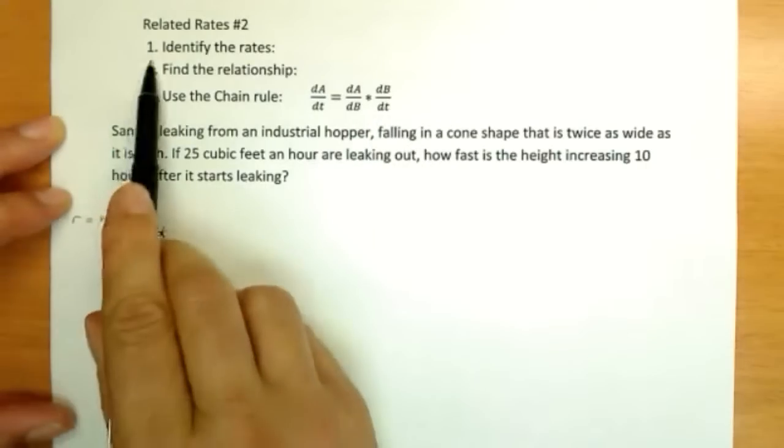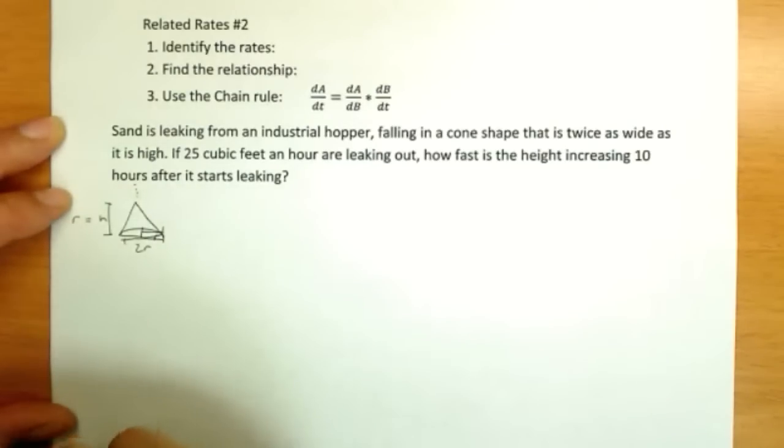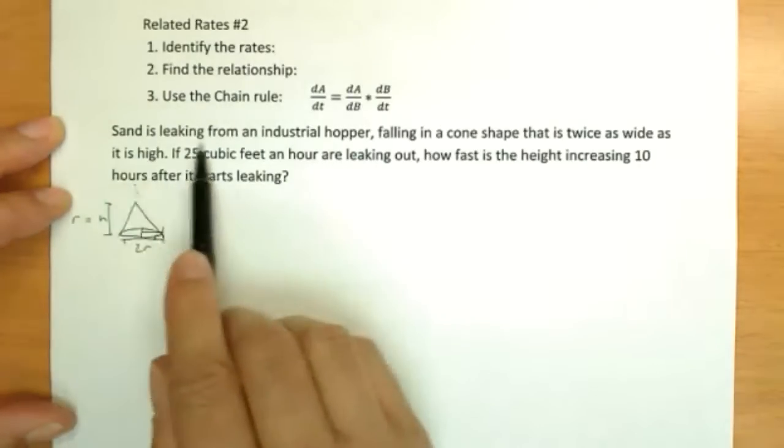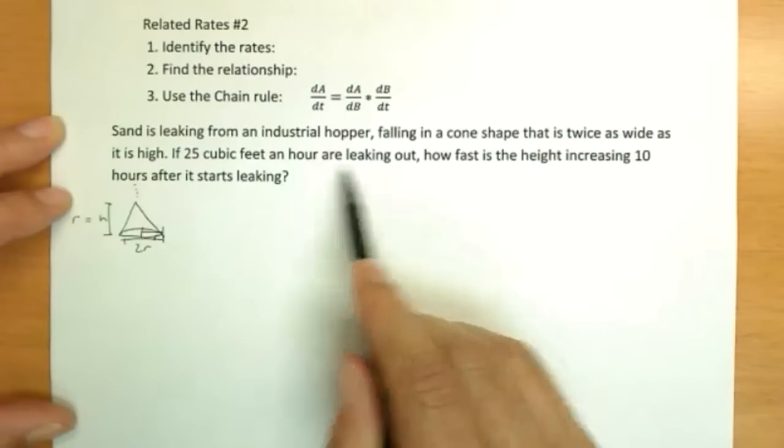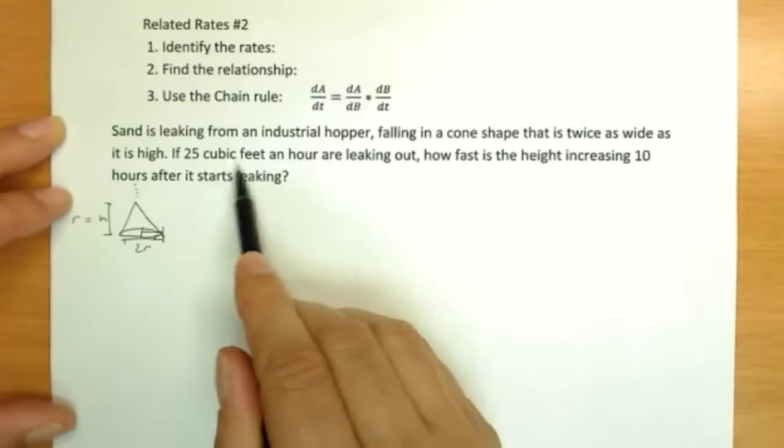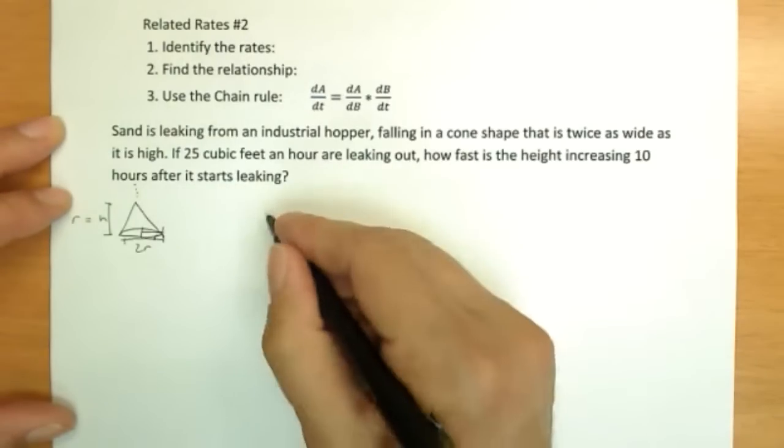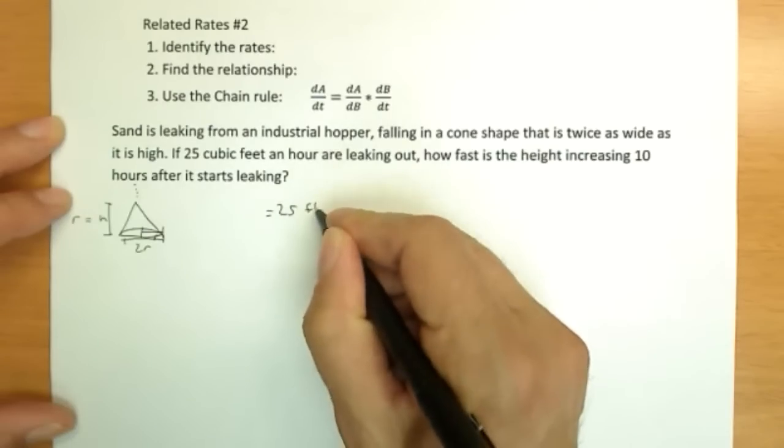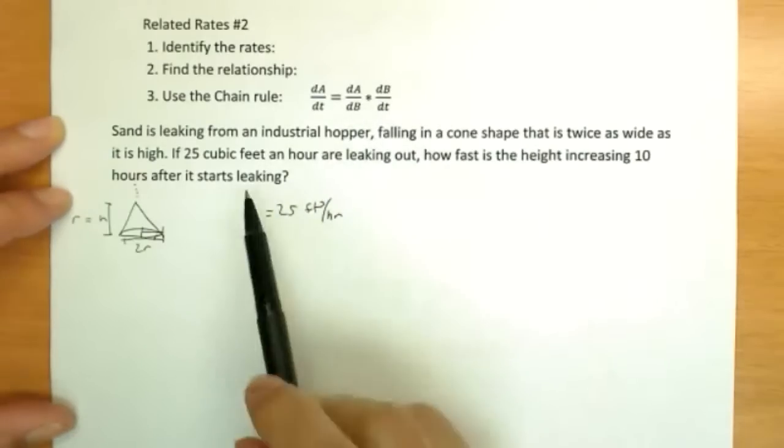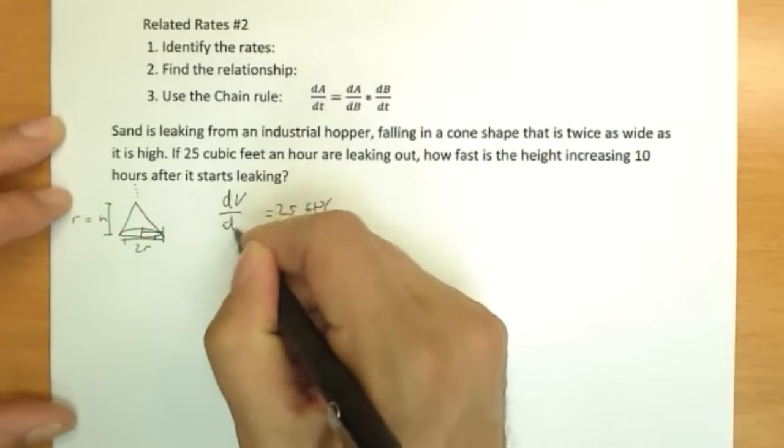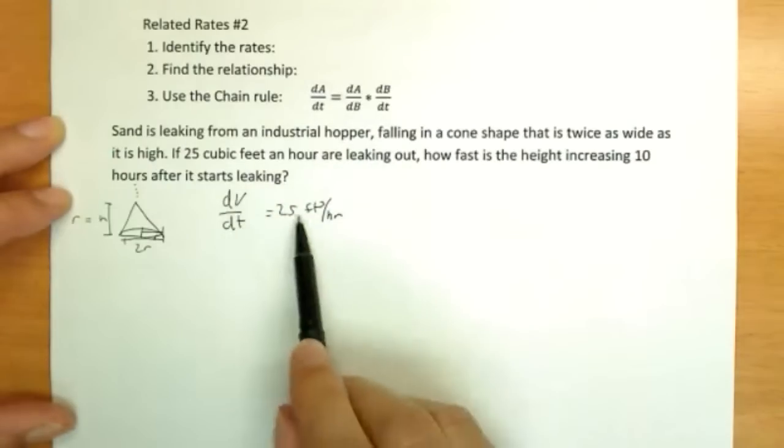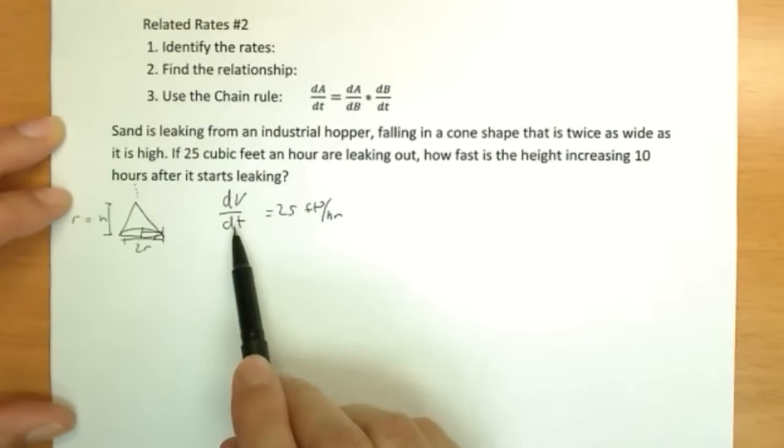So let's start with the easiest first step. And by the way, this also means when you're doing one of these problems, you can't say I don't know what to do. You do know what to do. Identify rates. That's a reading question, not a math question. So sand is leaking from a hopper's volume. If 25 cubic feet an hour are leaking out, cubic feet is a measure of volume. So something is changing equal to 25 feet cubed per hour, which is definitely a rate. So dV/dt, that's our given rate.